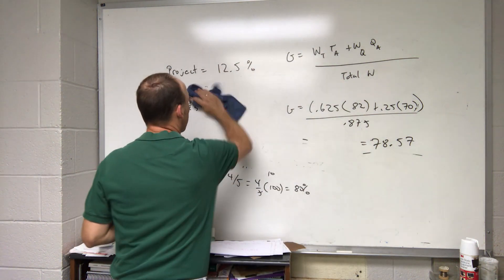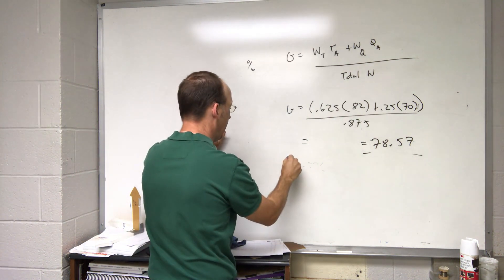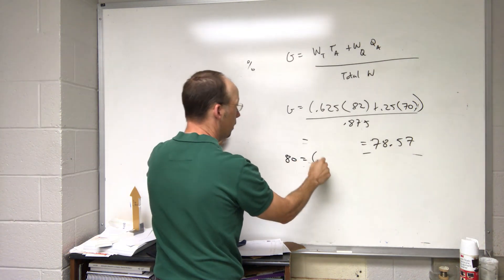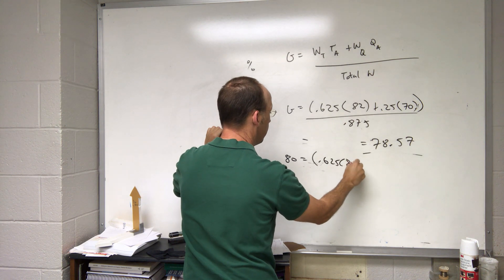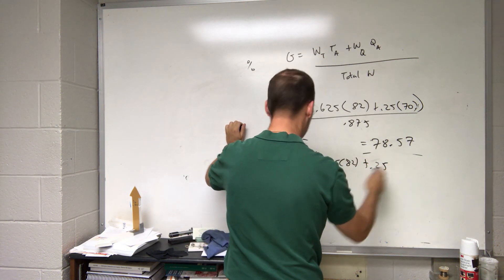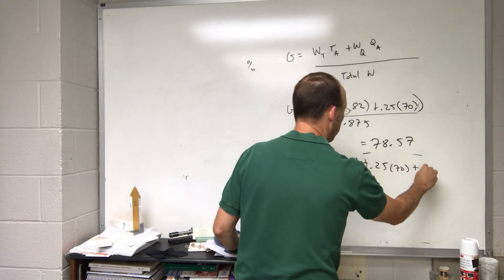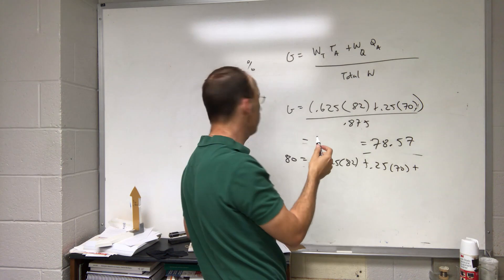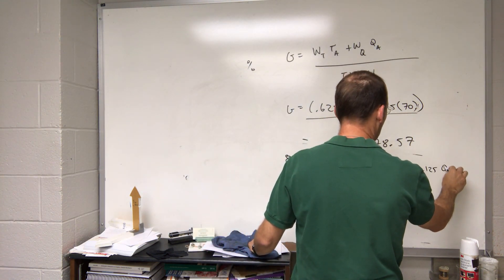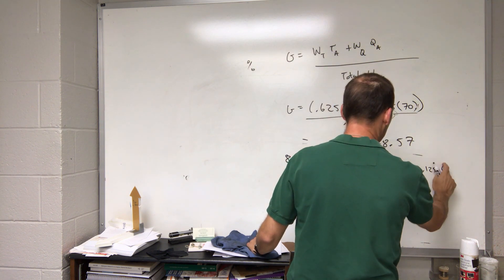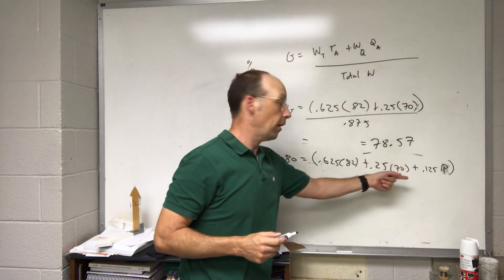So now I want the grade to be 80, and I want that to be the same—0.625 times 82 plus 0.25 times 70 plus the weight of the quiz, which I just deleted, which was 0.125 times—that was a project average—that's called P. And that's all divided by 1 because of all the grades. So now I just need to solve for P.